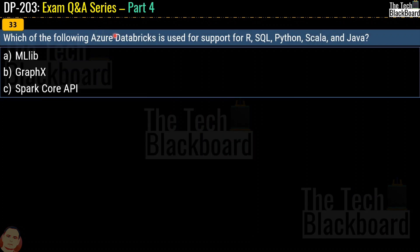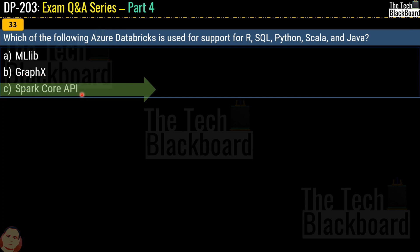Question number 33 asks: which Azure Databricks component provides support for R, SQL, Python, Scala, and Java? The options are MLlib (machine learning library), GraphX, or Spark Core API. The correct answer is option C, Spark Core API.